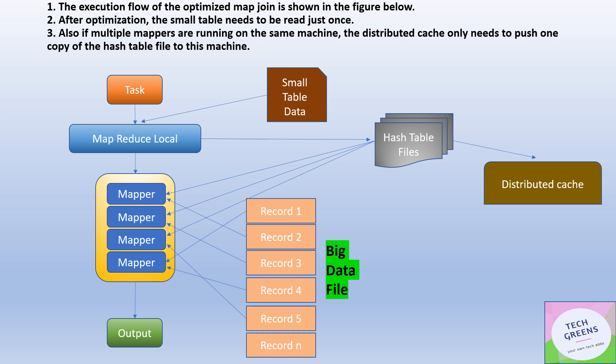So the execution flow for map side join is: you submit a task, a map-reduce local phase runs first — its job is to read the smaller file, convert it into a hash table, and serialize it into a file. Once that local phase is finished, the actual map-reduce task starts. The hash table is read and put into the memory of the nodes where mapping is running, and then the mapper performs the join between the smaller table and the bigger table based on the join key, and the output is produced.